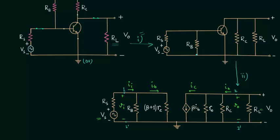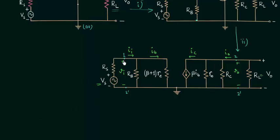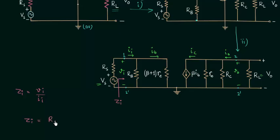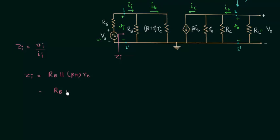Current through resistance (β+1)RE is the base current and current in the collector branch is the collector current. Now we will calculate the input impedance. The input impedance is the impedance seen from terminals one and one prime, represented by Z subscript I. Z subscript I is equal to the input voltage VI divided by the input current II. The input impedance is equal to RB connected in parallel with (β+1)RE, or we can say Zi equals RB times (β+1)RE divided by RB plus (β+1)RE.